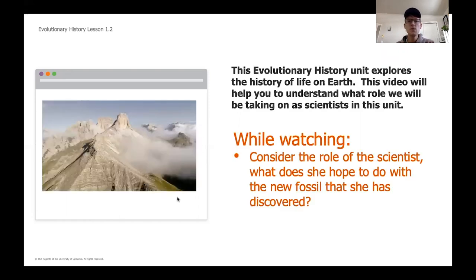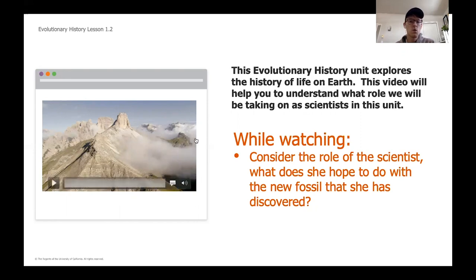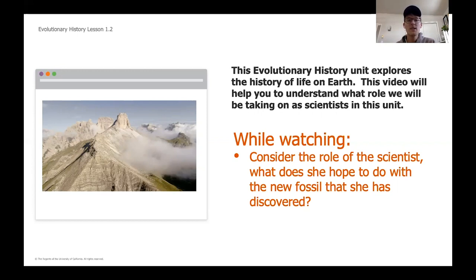The reason we do that is that scientists who study evolutionary history are studying the history of life on Earth — they may not always be studying things we can see today. The next video we're going to watch will help us understand how those scientists think. Our role in this unit is going to be very similar to the scientist in this video. As you're watching, consider: what is the scientist's role, and what is her job with the newly found fossil she has discovered?